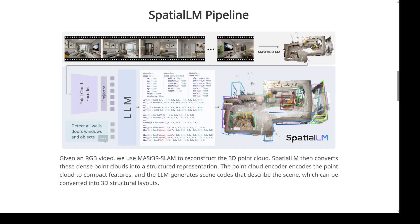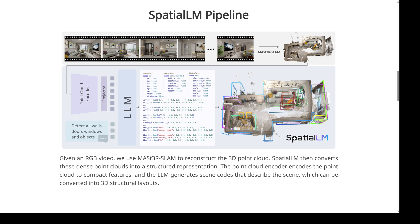Now we have a semantically rich representation of the 3D scene, and this is where the LLM — the big brain of the operation — gets involved. The LLM isn't just processing spatial features; it's using its vast knowledge base to make sense of what it's seeing. LLMs are trained on massive amounts of text and code, so they've learned a ton about how the world works, and now they're applying that knowledge to a 3D environment. The objective is clearly stated: detect all walls, doors, windows, and objects.